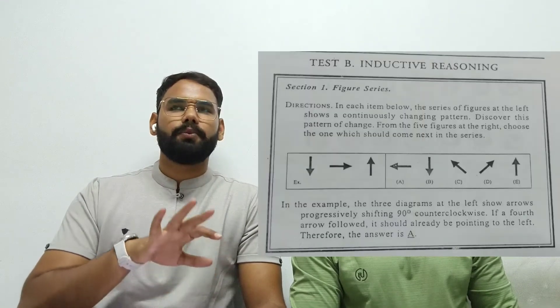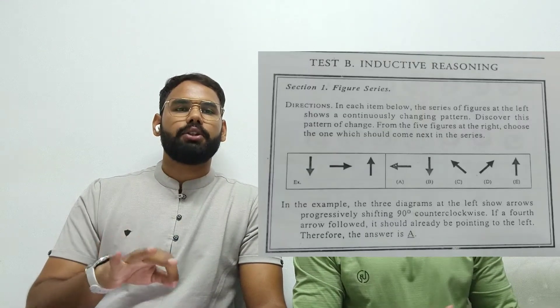In Inductive Reasoning figure series, you get three figures in the question — for example, a triangle, then a square, then a pentagon — and you have to guess the next image, which would be a hexagon (six sides). You can figure this out easily. These are essentially free marks if you pay attention.